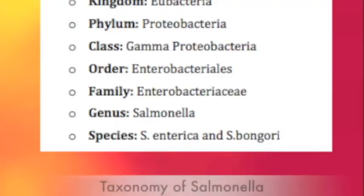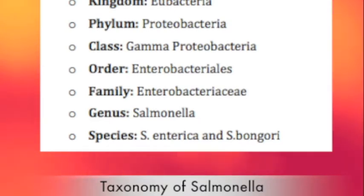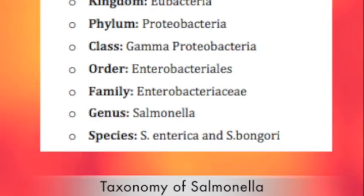Taxonomy. The basic classification of salmonella, which is their taxonomy, is fairly complex. It consists of the kingdom, which is Eubacteria; the phylum, which is Proteobacteria; the class, which is Gammaproteobacteria; and the order, Enterobacteriales.